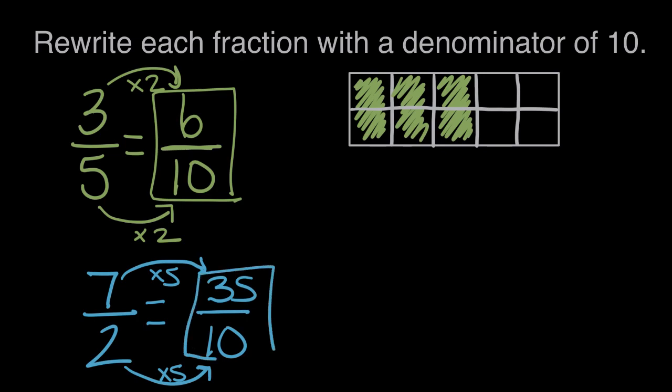So thirty-five-tenths is equal to seven-halves. So to change these two fractions to have a common denominator of ten, three-fifths will become six-tenths and seven-halves will become thirty-five-tenths.